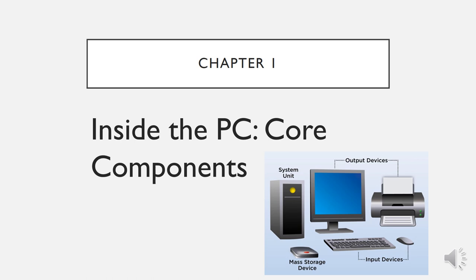Mass storage is used for storing all your data. Output devices show the output or information you want to display on screen as well as on paper. Input devices are used for inputting your program or any set of instructions that you want to manipulate with the help of the system unit. All these are core components of a PC. But the system unit itself is a combination of many small core components.